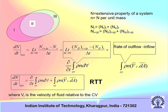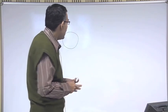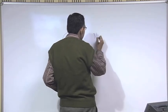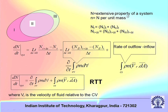Let N be an extensive property of the system — a property that depends on the extent of the system. N at time t is a combination of N at region 1 and N at region 2, because at time t the zone is zone 1 plus zone 2. Similarly, N at t plus delta t equals N2 at t plus delta t plus N3 at t plus delta t.